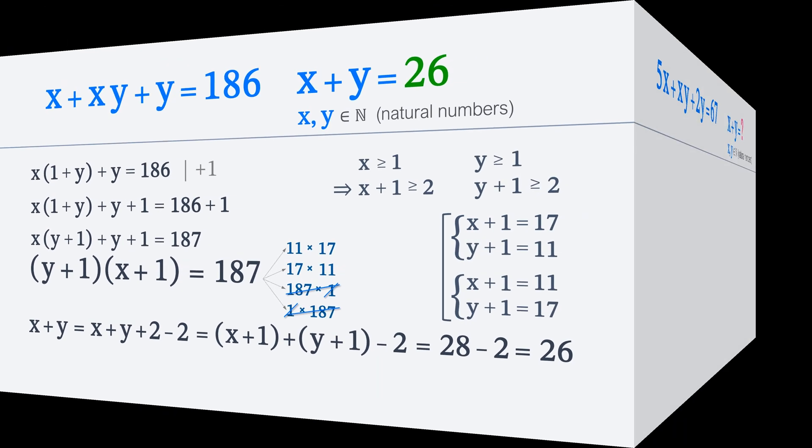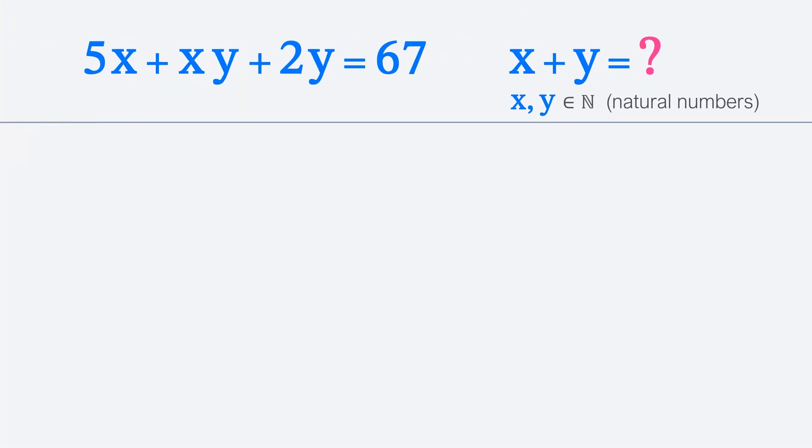This approach — to find x plus y when we know that x and y are natural numbers — can also be used for other linear equations with two variables. Let's solve the following problem: 5x plus xy plus 2y is equal to 67. We need to find the sum of x and y, given that x and y are natural numbers.